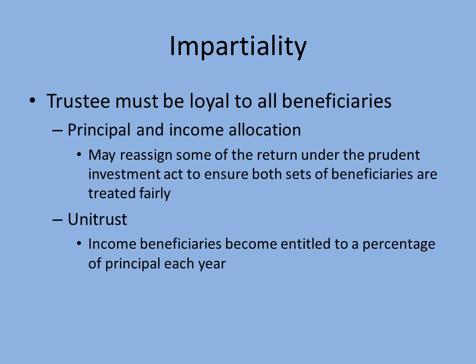Impartiality: the trustee has to be loyal to all beneficiaries — the current and the remainder. One way this is done is through proper principal and income allocation. You have a principal account holding the assets and an income account holding whatever income is generated from that principal. In order to meet the duty of impartiality, depending on the trust and its profitability, some of that income may be re-characterized into principal.